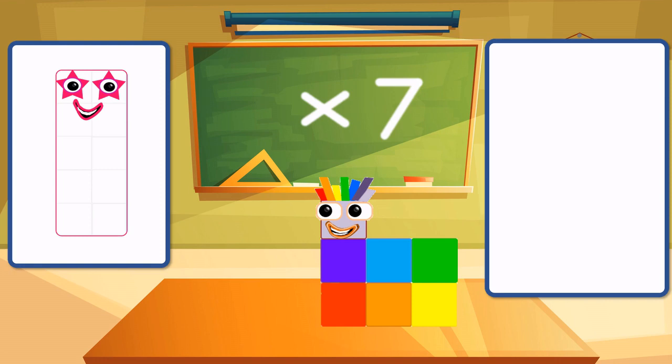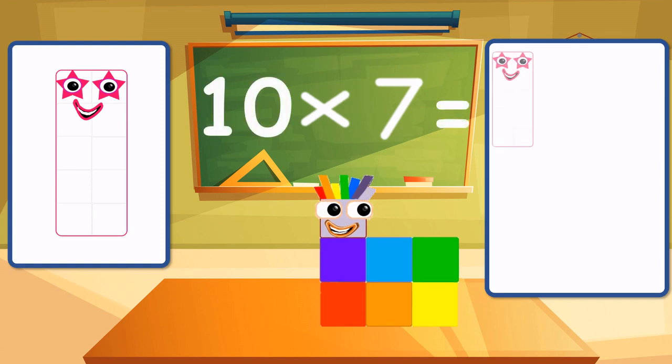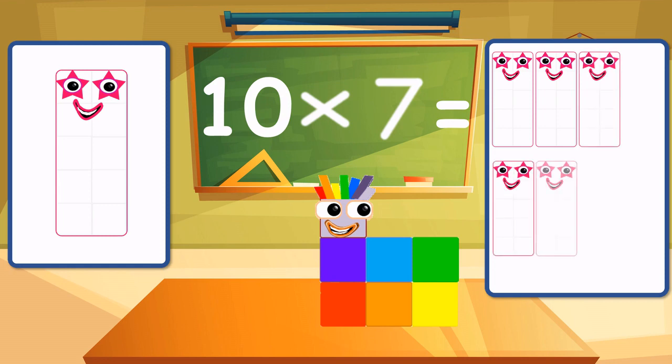Ten times seven is equal to ten, twenty, thirty, forty, fifty, sixty, and seventy.